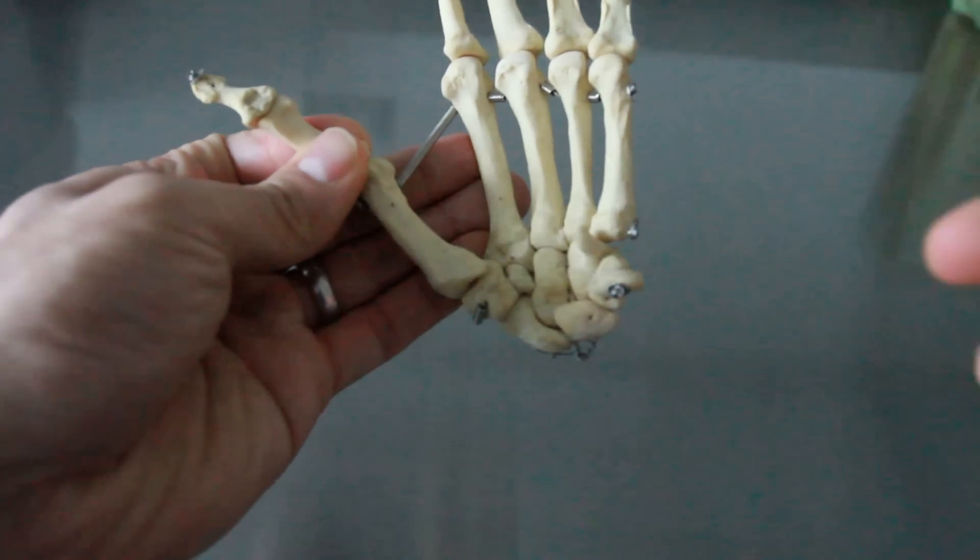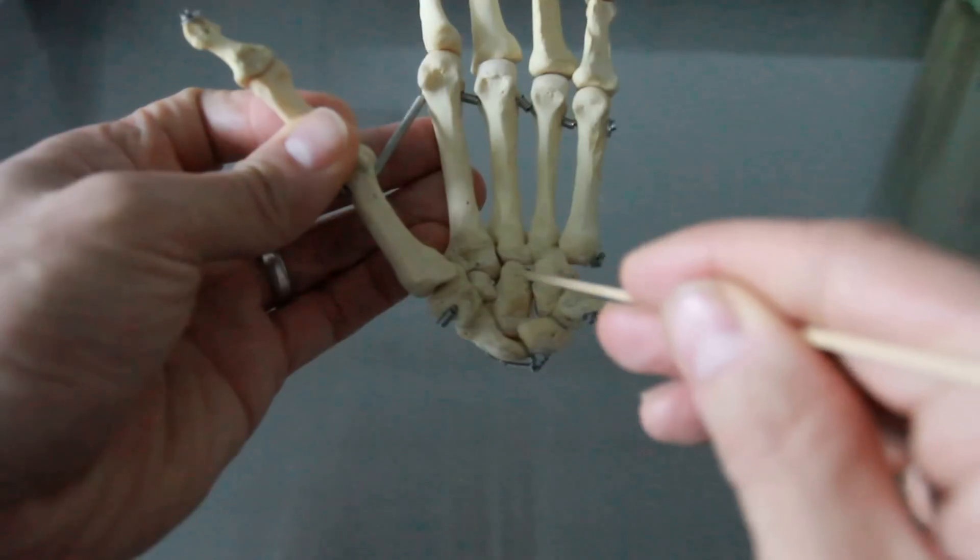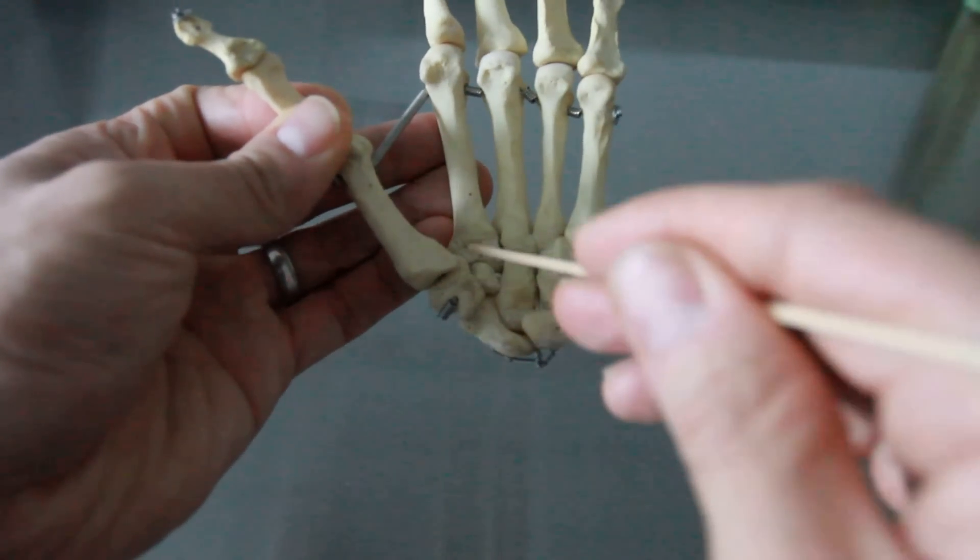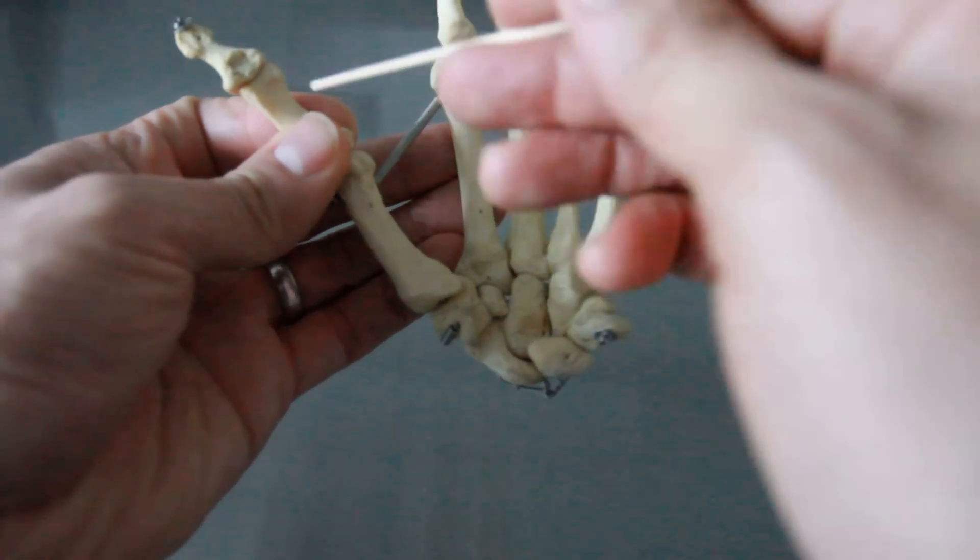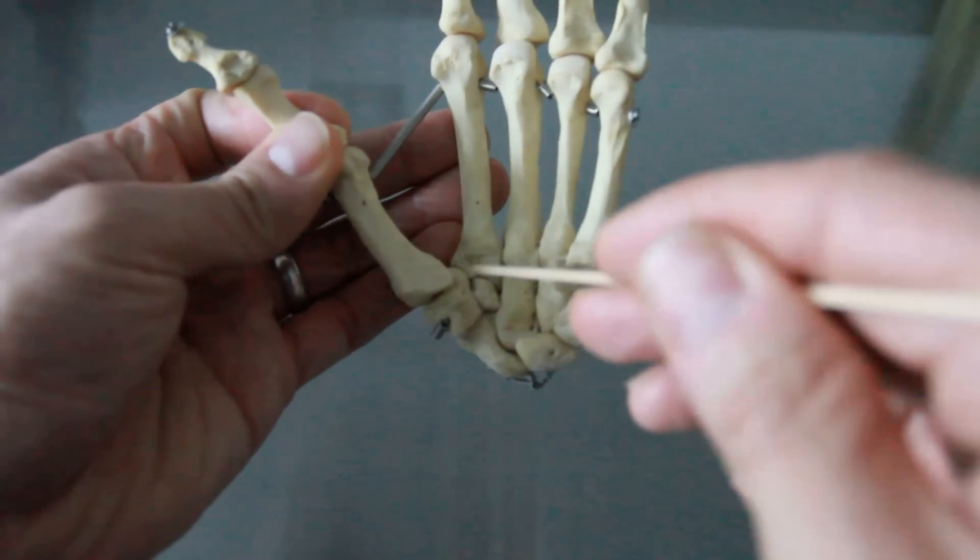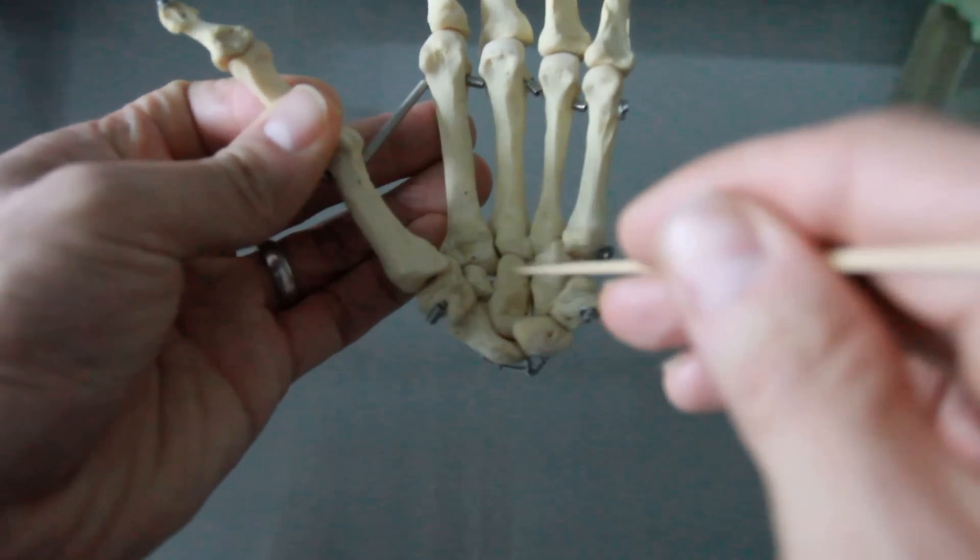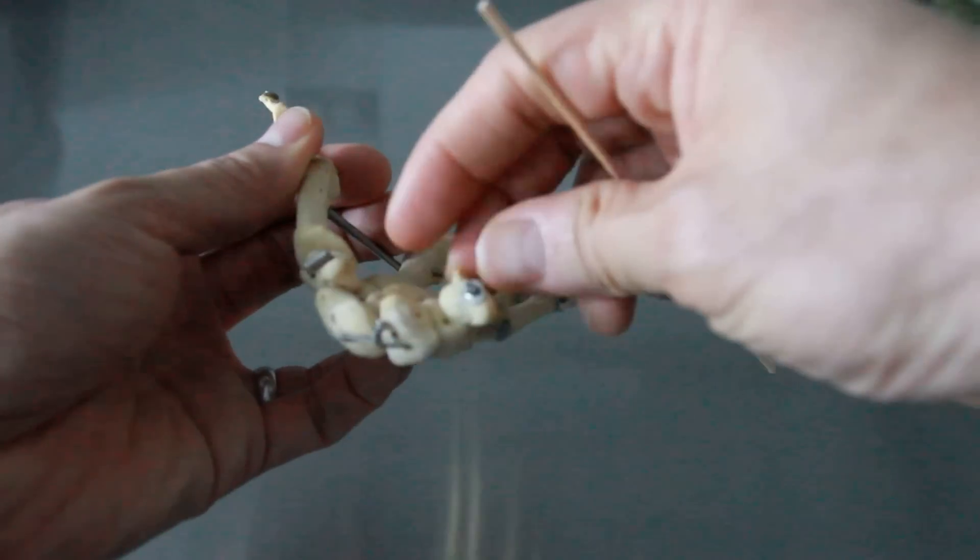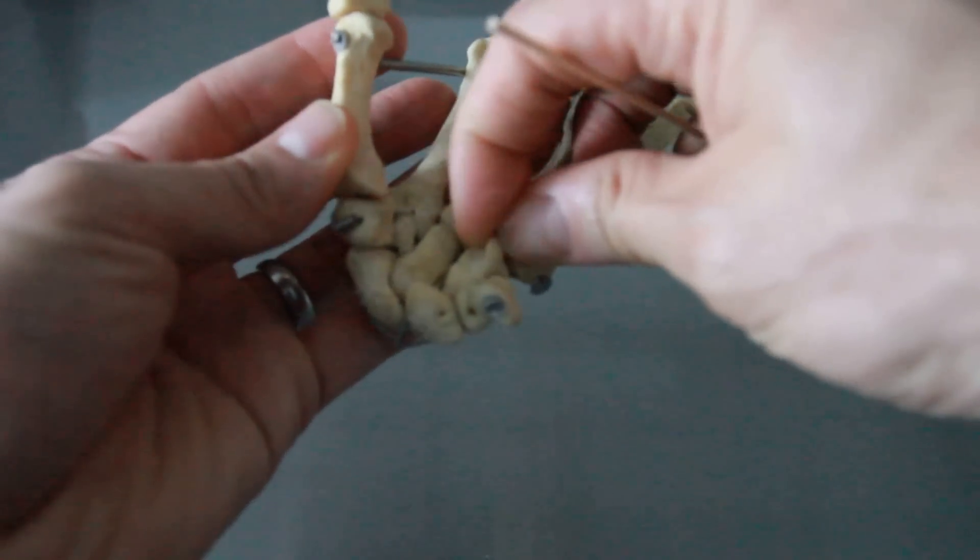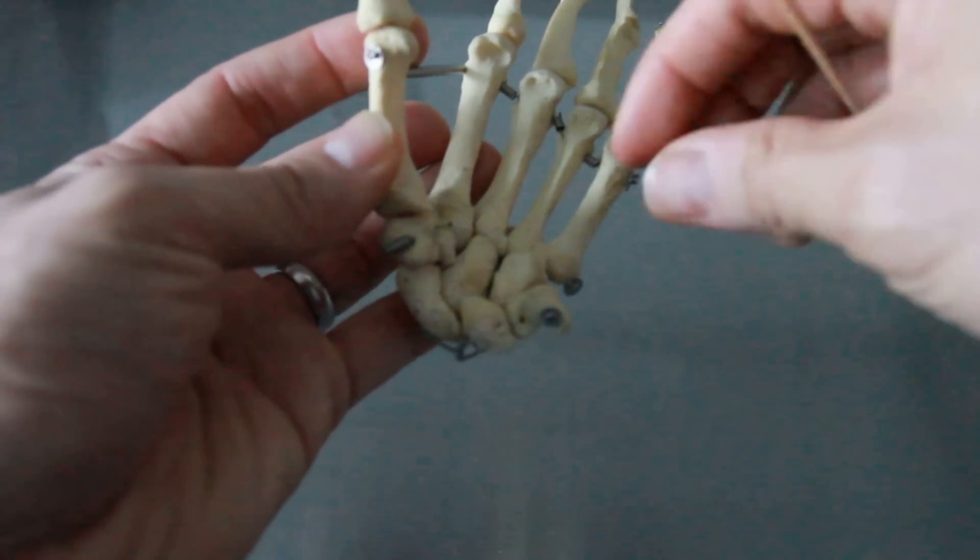The next row is trapezium, trapezoid, capitate, hamate. And you always, again, start with the thumb. Trapezium, trapezoid, capitate, and hamate. Hamate always has that hook. So you can always remember if you rest here, you're like, oh, I got the hook. Hook of the hamate. Double H.